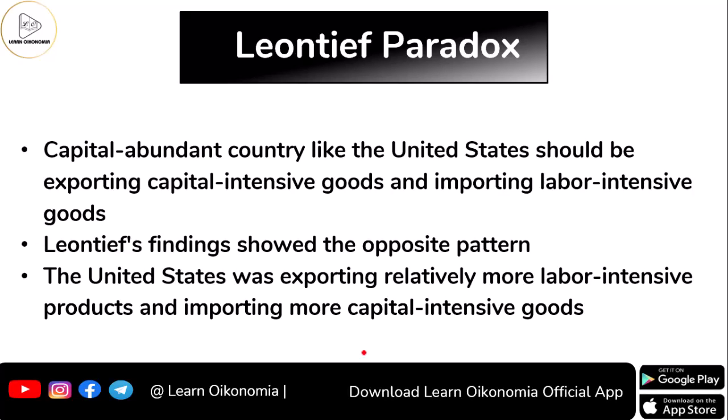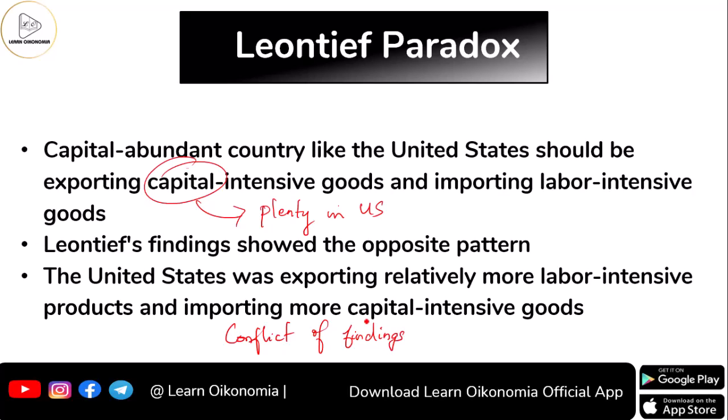As a capital-abundant country, the US should — according to the H.O. model — be exporting capital-intensive goods and importing labor-intensive goods. But Leontief's findings showed the opposite: the US was exporting relatively more labor-intensive commodities and importing capital-intensive commodities. This conflict of findings, contradictory with each other, is what constitutes the Leontief Paradox.